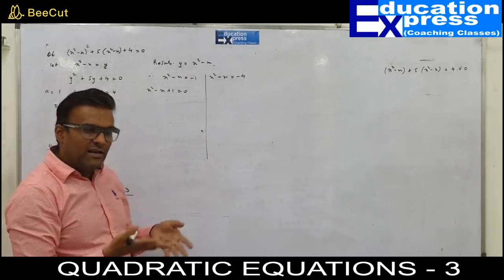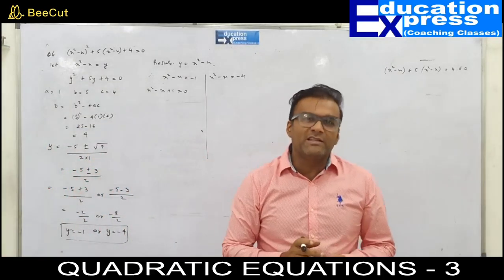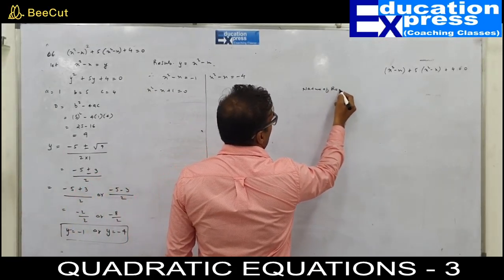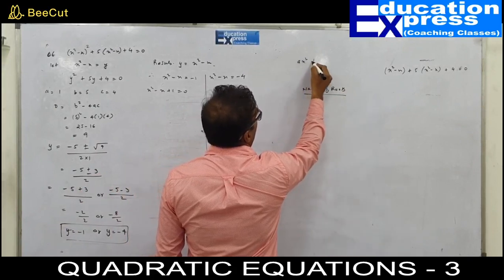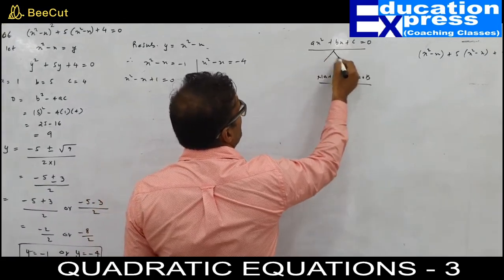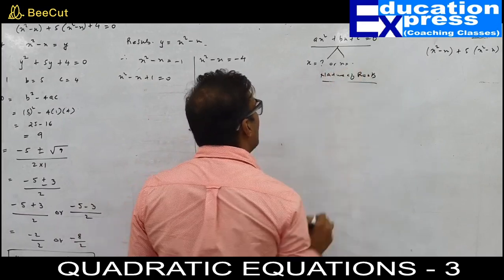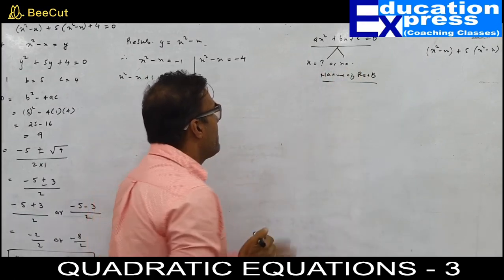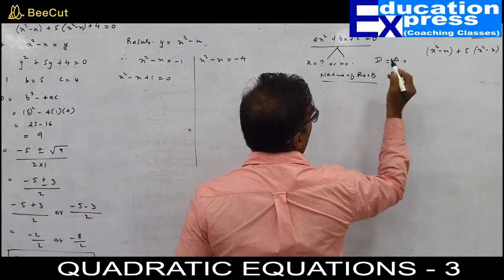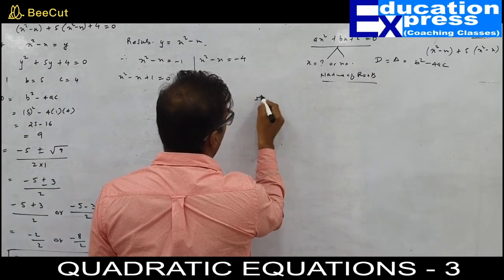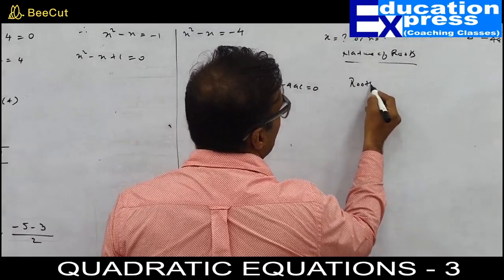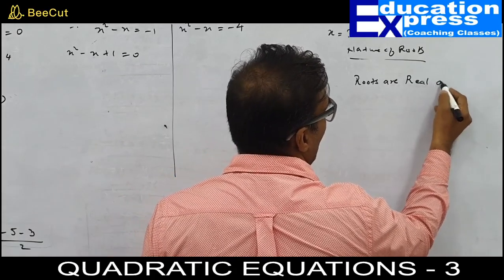Before proceeding, let me explain the nature of roots. Whenever we have a quadratic equation ax squared plus bx plus c equals to 0, we get two roots. The discriminant D equals b squared minus 4ac determines the nature. If b squared minus 4ac equals 0, the roots are real and equal.